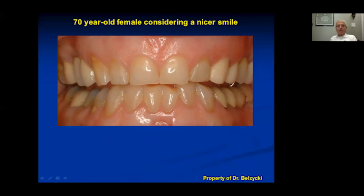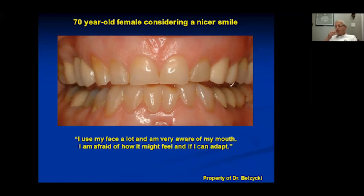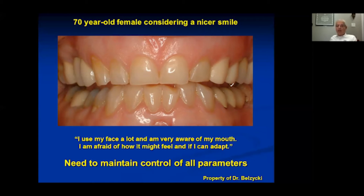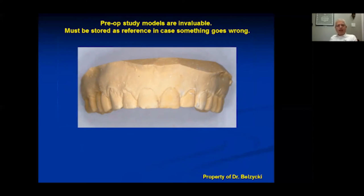I said yes, we can go ahead and place crowns right across the front. But English was a second language for her, and these were her words: 'I use my face a lot and I'm very aware of my mouth.' As she was saying this, I could see her rubbing her lip over her teeth and licking them. She said, 'I'm afraid of how it might feel and if I can adapt.' So the flags go up — here's somebody with a very high sensory acuity. I need to maintain control of all the parameters. A pre-op model was taken; I pour up models here in the office. This model is sacrosanct — it has to be stored, because if there's a problem, I need to know my starting point.